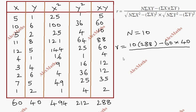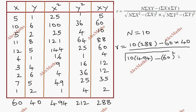Divided by the square root of: 10 into sigma x square 494, minus sigma x whole square — sigma x is 60, so 60 whole square. Continuing into the denominator, under the root: n value into sigma y square 212, minus sigma y whole square, so 40 whole square.